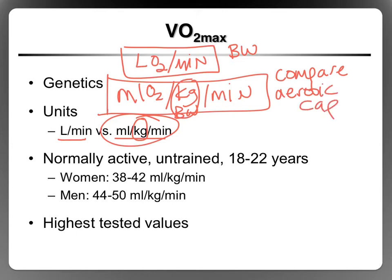What are some normal values? If you take a normally active, untrained individual aged 18 to 22 years old, women tend to have an average of about 38 to 42, and men have an average of 44 to 50. So we do see differences between men and women.